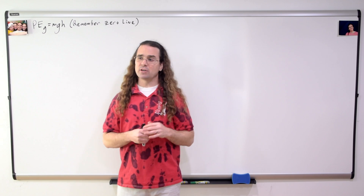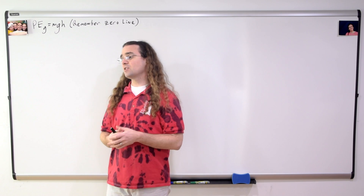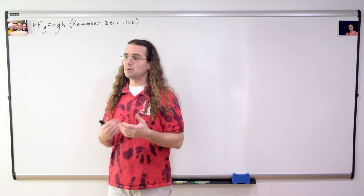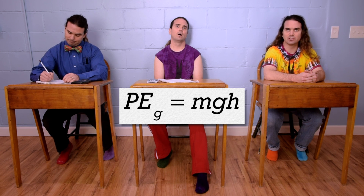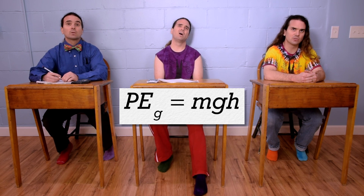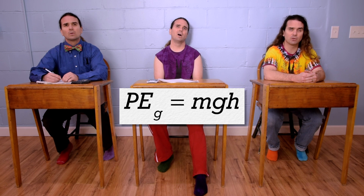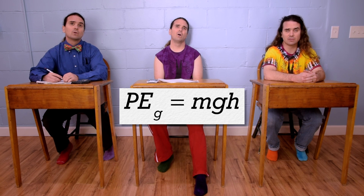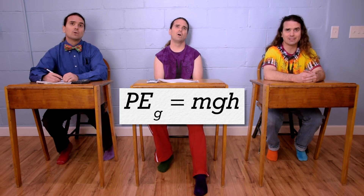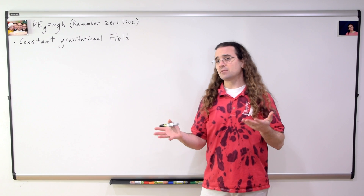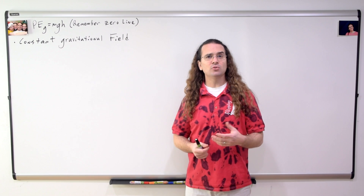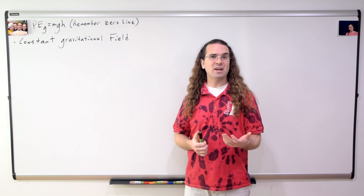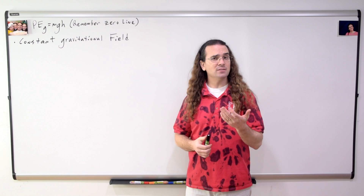So now back to the question for you, Bo — where is this equation applicable? We can use gravitational potential energy equals mass times acceleration due to gravity times the vertical height above the horizontal zero line when the object is on the surface of a planet. More generally speaking, we can use this equation whenever the gravitational field is constant.